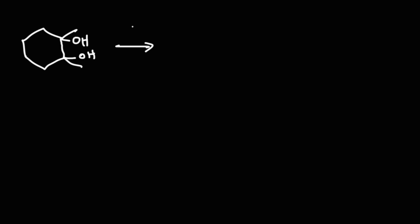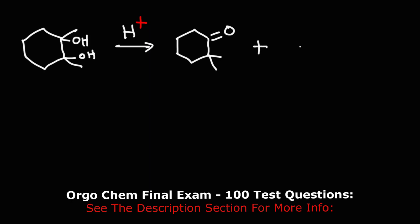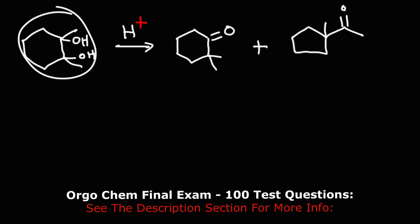Now let's work on some other example problems. Here we have another 1,2-diol, and using an acid catalyst, it's going to form two products. Here's one type of ketone that can be formed with a six-membered ring, and here's another ketone that can form as well, but this one is going to have a five-carbon ring. Go ahead and propose a mechanism for the conversion of this particular diol into those two ketones.